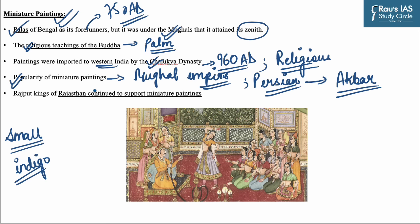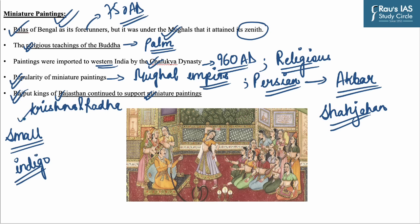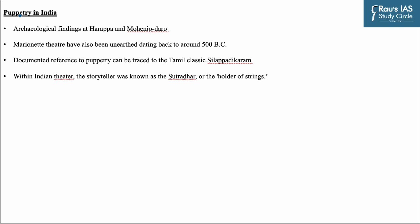During Mughal times, these paintings also showed influence from European paintings during the time of Shah Jahan. The Rajput kings of Rajasthan continued to support miniature paintings and artists even after the Mughal Empire collapsed. Miniature paintings from Rajasthan had unique characteristics and frequently portrayed the royal lifestyle and tales of Krishna and Radha, despite being influenced by the Mughal style.